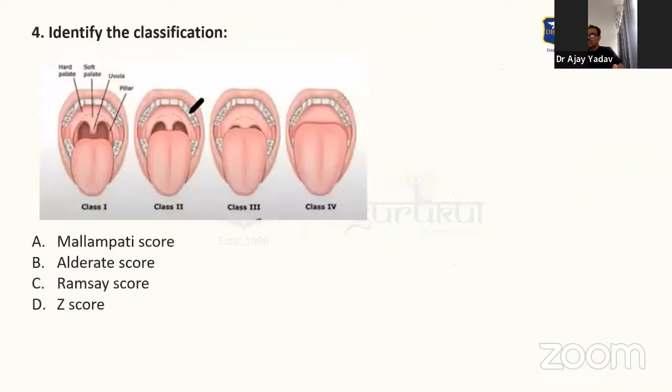Question number four, identify the classification. Mallampati score, Aldrete score, Ramsay score, Z score. Regarding these choices we are not very sure because actually I think only Aldrete score I think managed to get. But other I don't think may be correct choices because students were not sure about the other choices. But definitely yes, Mallampati score and Aldrete score, they were sure about. Whether they asked Ramsay score or Z score that we are not very sure about. Anyway, that's not important. Important is what is this classification.